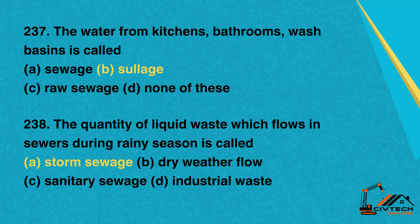Question 237: The water from kitchens, bathrooms, and wash basins is called. A. Sewage. B. Sulage. C. Raw sewage. D. None of these. Correct option: B. Sulage.